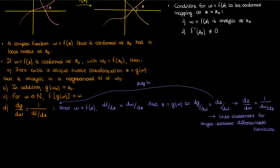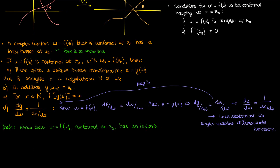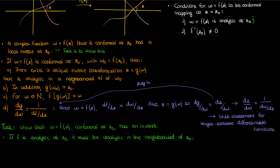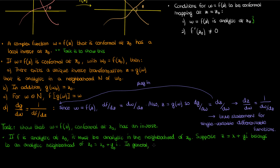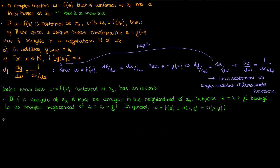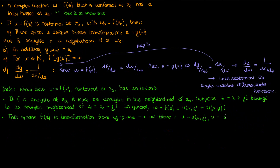Now that we've covered the preamble, I'm going to show that w equals f of z, which is conformal at z-naught, indeed has a local inverse. Because f of z is conformal, f must be analytic at z-naught, and if f is analytic at z-naught, it must be analytic in some neighborhood of z-naught. Suppose I have a complex number z equal to x plus yi in this neighborhood of z-naught, which is given by x-naught plus y-naught i. I can write f of z as u of x and y plus i times v of x and y — a transformation from the z-plane (the x-y plane) to the w-plane (the u-v plane).